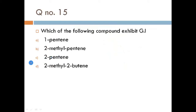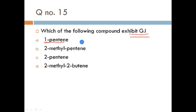Next question: which of the following compound exhibits geometrical isomerism? The options are 1-pentene, 2-methylpentene, 2-pentene, and 2-methylbutene. As mentioned in the previous video, any compound with 'one' (1-) in the name will NOT show geometrical isomerism, because the terminal carbon of the double bond has two same hydrogen atoms attached — same atoms on a double bonded carbon means it cannot show geometrical isomerism. So 1-pentene does not qualify.